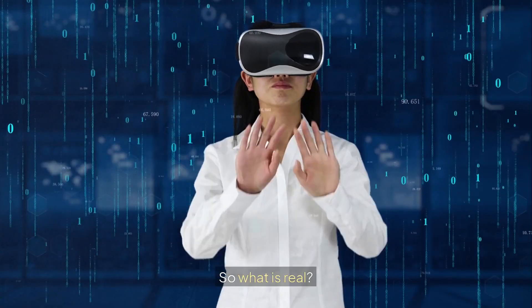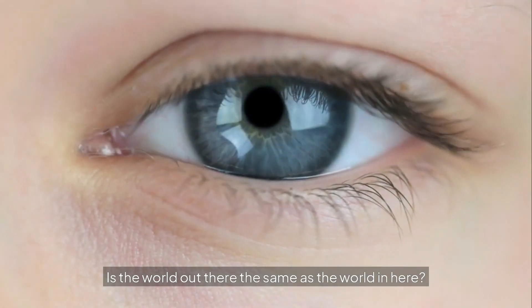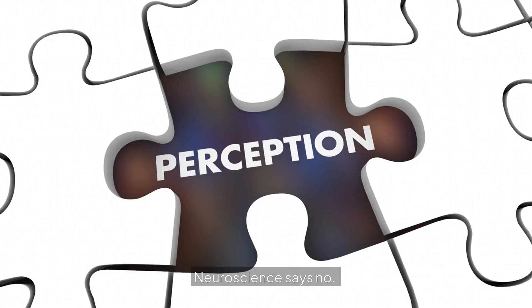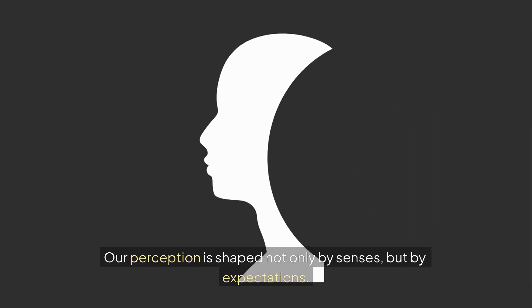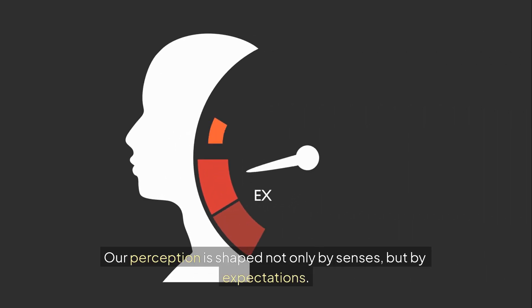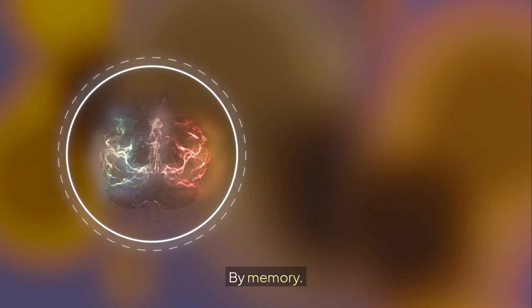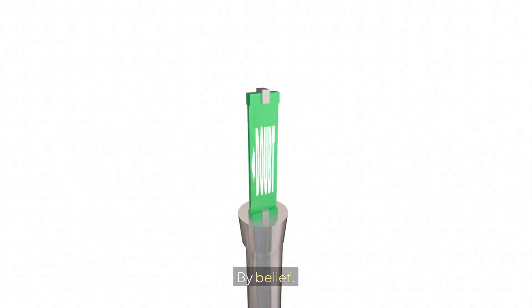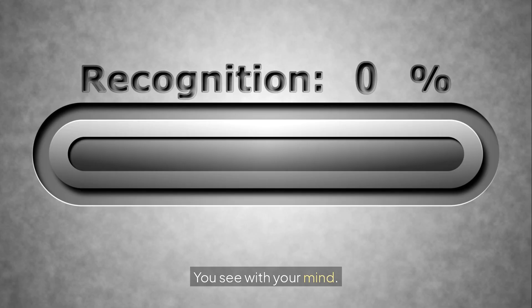So what is real? Is the world out there the same as the world in here? Neuroscience says no. Our perception is shaped not only by senses, but by expectations, by memory, by belief. You don't see with your eyes. You see with your mind.